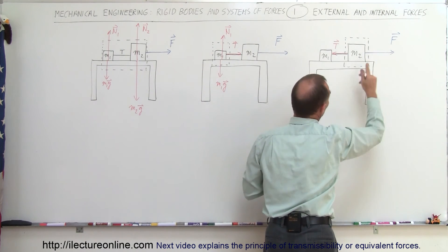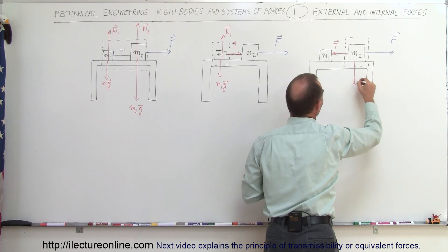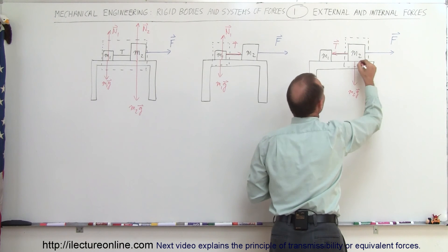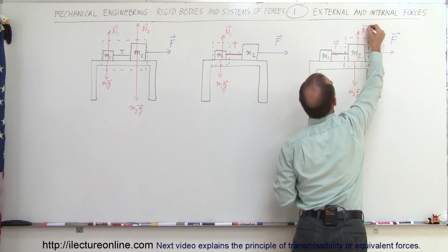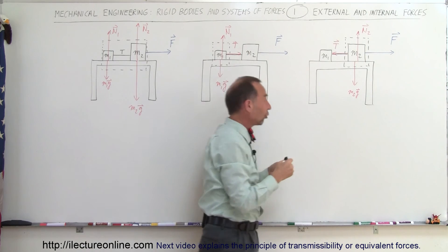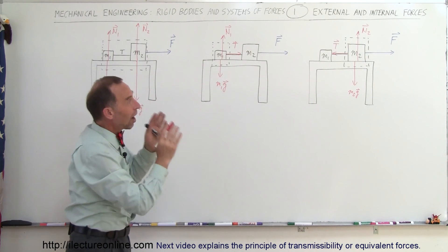We have the force pushing to the right. We have M2G, which is the force of gravity pulling down. And then we have the normal force, N2, pushing back up in that direction. So those would be the external forces on M2.